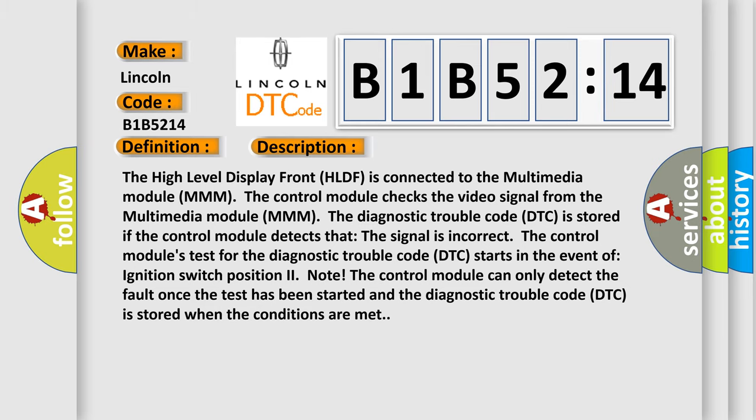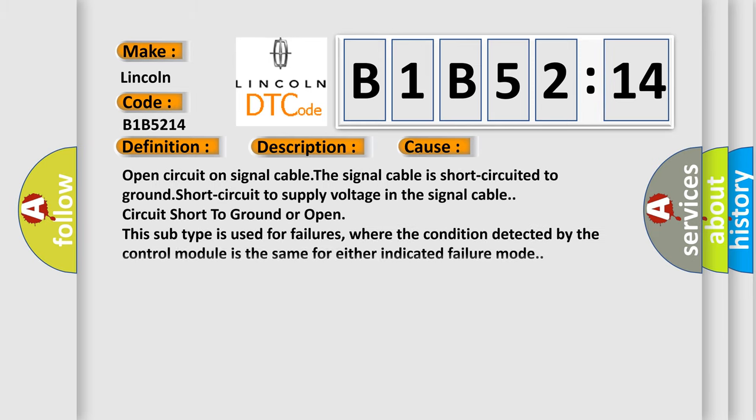This diagnostic error occurs most often in these cases: Open circuit on signal cable. The signal cable is short circuited to ground, short circuit to supply voltage in the signal cable, or open. This subtype is used for failures where the condition detected by the control module is the same for either indicated failure mode.